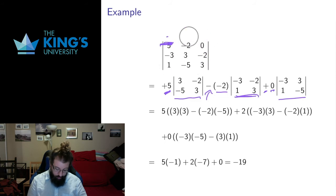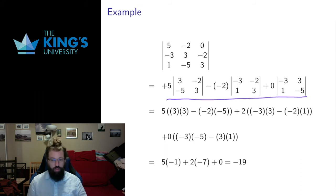So in this way, what I've done is I turn this 3 by 3 matrix determinant into three 2 by 2s. And then I just calculate these 2 by 2s. So I get 5 times 3 times 3 minus negative 2 times negative 5. And negative negative is plus 2. And then 3 times negative 3 minus 2 times negative 1. And then 0, 3 times negative 5 minus 3 times 1. And then I just evaluate all that arithmetic.